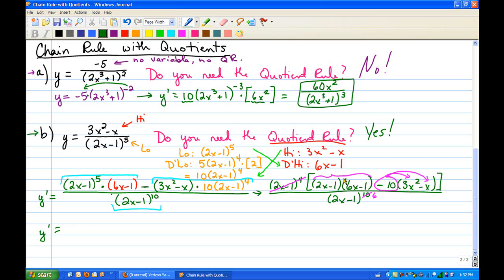if we foil this, first give us 12x squared, outers are minus 2x, inners are minus 6x, so that's negative 8x, and then plus 1. Distribute your minus 10, you get negative 30x squared, then plus 10x, and that's all over 2x minus 1 to the sixth, because remember, we canceled four of those out, so 10 minus 4 left us with 6 on the bottom.